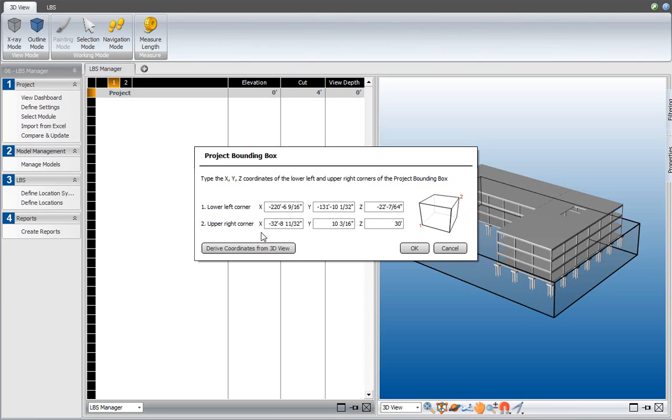Alternatively, I can derive the coordinates from the 3D view, in which case the software determines, based on the highest element, what the optimal size of the bounding box should be. As you can see, the value was updated.